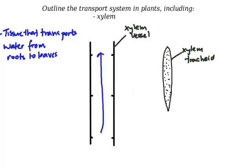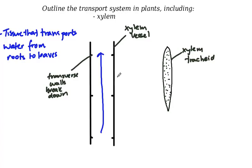As xylem tissue matures, it loses these cross walls — these transverse walls — so they break down, forming hollow tubes. The cells are in a sense dead: there is no nucleus and the cytoplasm is no longer present. The tubes need to be supported by other cells around them. One of the ways they support themselves is through lignin spirals. Lignin is a compound that helps to reinforce the structure.